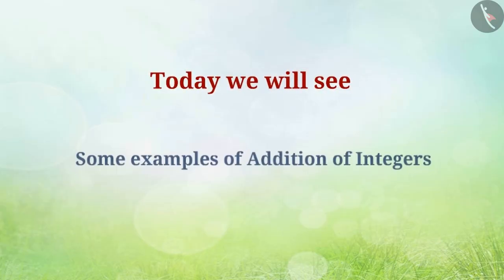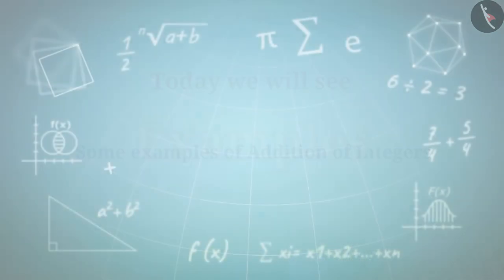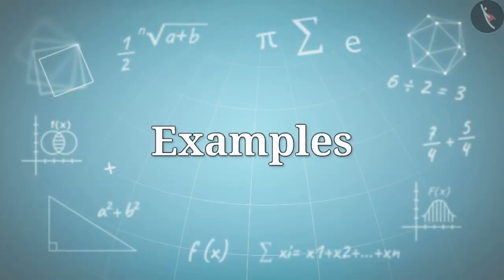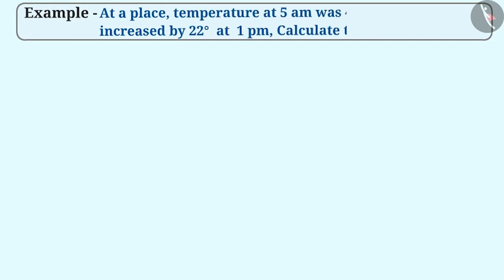Today, we will see some examples related to addition of integers. At a place, the temperature at 5 am was 4 degrees centigrade below 0 degrees. It increased by 22 degrees at 1 pm. Can you calculate the temperature at 1 pm?